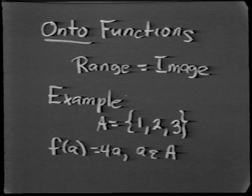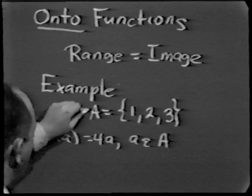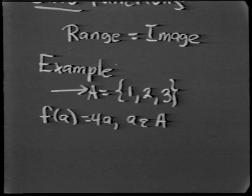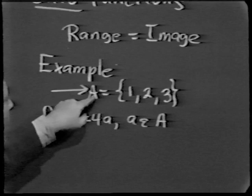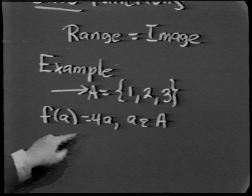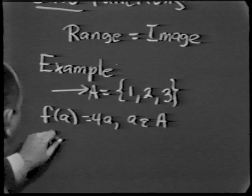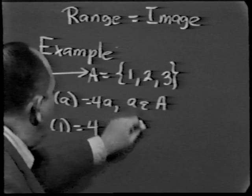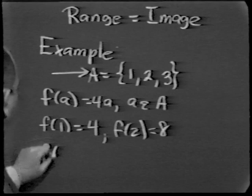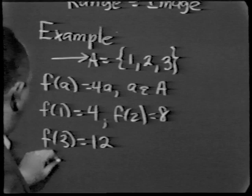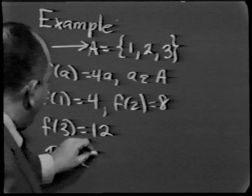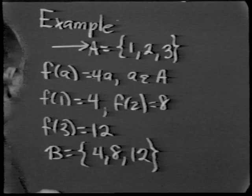Let me give an example. Let A be the set consisting of the numbers 1, 2, and 3, and define f(a) = 4a for each a in A. So f(1) = 4, f(2) = 8, and f(3) = 12. Now invent a new set B with elements 4, 8, and 12. The function f from A to B uses up all of B — f maps 1 into 4, 2 into 8, and 3 into 12. The range and the image happen to be the same.